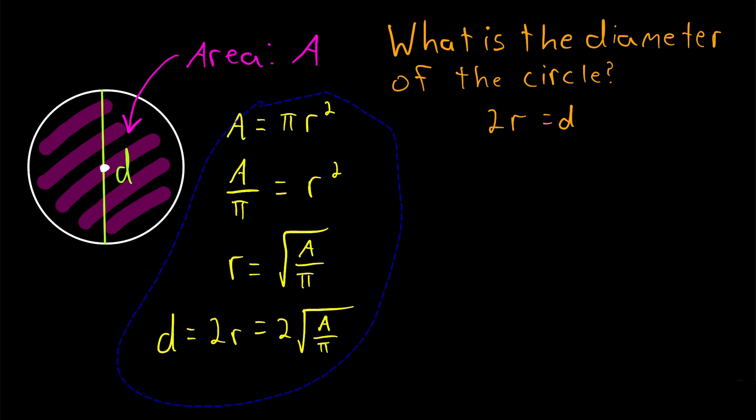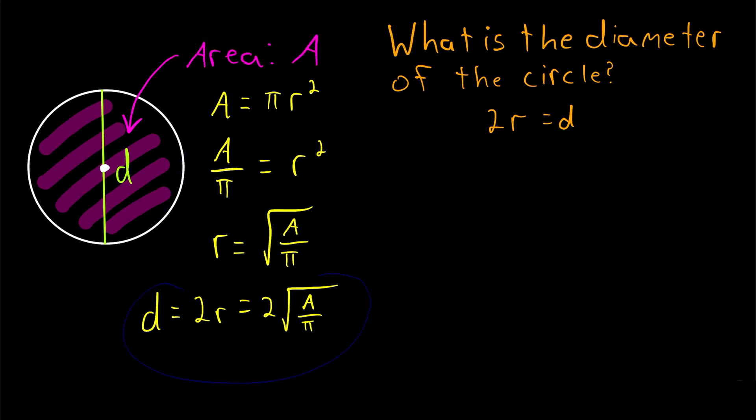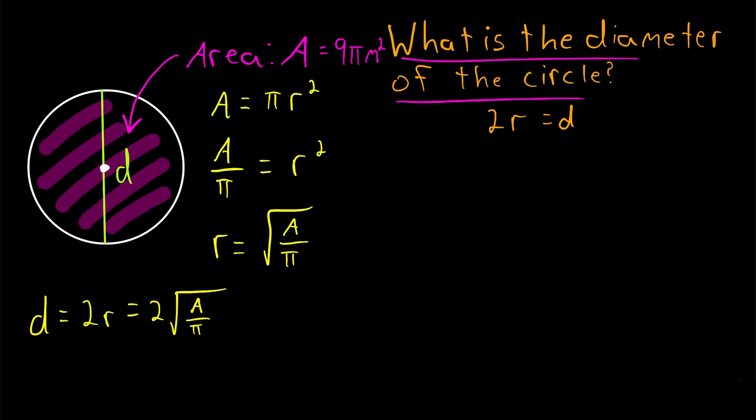So let's go ahead and use some actual numbers and apply this formula that we just found. Suppose we're given that the area of our circle is equal to 9 pi meters squared. What is the diameter of this circle? First, we'll just find the radius, and then we'll just have to multiply it by 2 to give us the diameter.